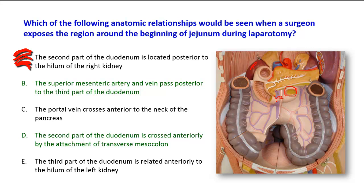The superior mesenteric artery and vein are located in the mesentery of the small intestine. This is the attachment of the root of the mesentery of the small intestine. It is attached at the left side of the L2 vertebra, then crosses the midline and goes down into the right iliac region. While doing so, it crosses the third part of the duodenum, which is retroperitoneal, and the superior mesenteric vessels pass in front of the third part of the duodenum to gain access to the mesentery of the small intestine.